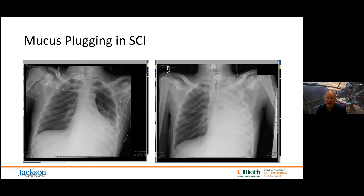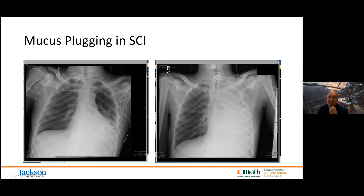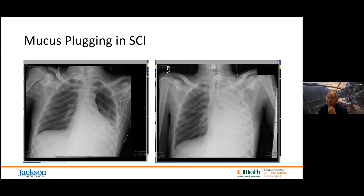A recent admission to our spinal cord injury service from the ICU demonstrated that within 12 hours, an individual with C6 complete spinal cord injury had basically developed a mucus plug. His aeration was diminished markedly and we had to transport him back to the ICU. Part of this could have been prevented by more optimally managing mucus secretions.